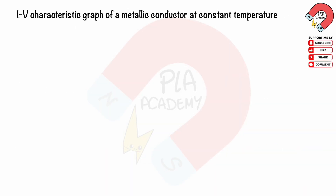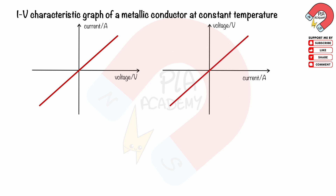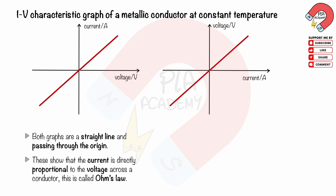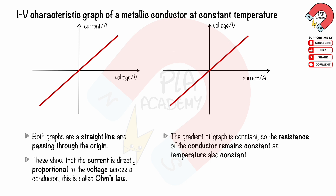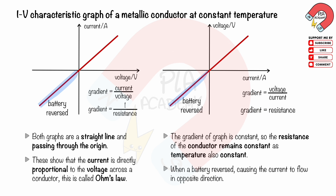IV characteristic graph of a metallic conductor at constant temperature. The graph of current I against voltage V, and the graph of voltage V against current I, are both straight lines passing through the origin. These show that current is directly proportional to voltage across a conductor. The gradient of the graph is constant, so the resistance of the conductor remains constant as temperature is also constant. When a battery is reversed, the current flows in the opposite direction. For the I-V graph, the gradient equals current divided by voltage, which is 1 over resistance. For the V-I graph, the gradient equals voltage divided by current, which is the resistance.